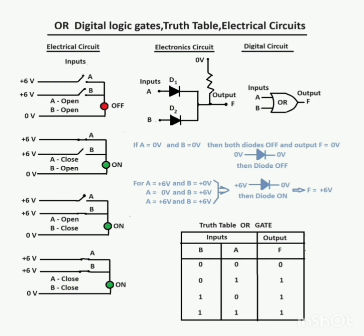Two tables are also given for inputs A, B and output F. Output is zero when both inputs are zero. If any input is high, or if both inputs are high, output F equals one or plus six volts. Thank you.